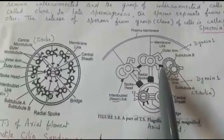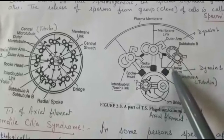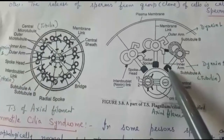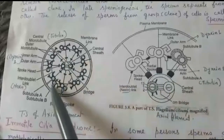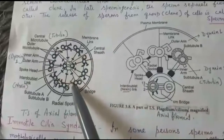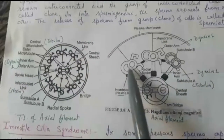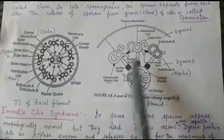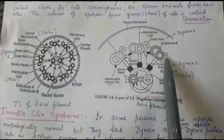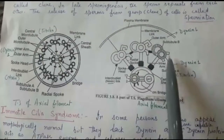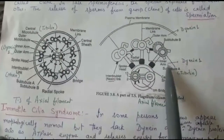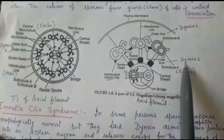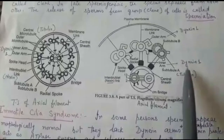From the A sub-tubule arise two arms. These doublets are interconnected by inter-doublet links. From the doublet arises a radial spoke, which has a spoke head near the central sheath, so the whole structure resembles a cart wheel. The sub-tubules are made up of tubulin protein, and the inter-doublet link is made up of nexin protein.